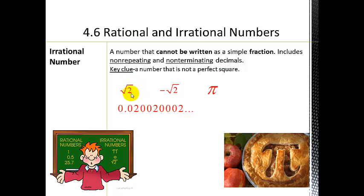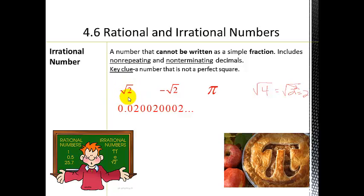Let's look at examples. The square root of two is irrational. If it were the square root of four, that's a perfect square — it's the same as the square root of two squared, those cancel, and you're left with two. But square root of two is irrational. Pi is one of the most common irrational numbers; we estimate it at approximately 3.14, but it really goes on and on to infinity — non-terminating and non-repeating, so it's irrational.